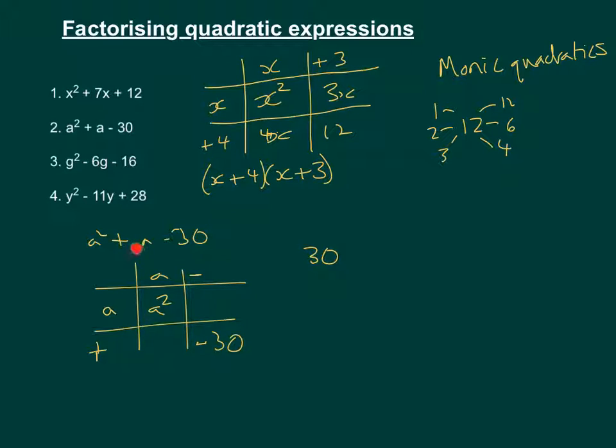So we're going to have two factors of 30, which will add or subtract to make 1, which is the coefficient of a. So two numbers that multiply to make this and add to make the coefficient, which is positive 1 in this case.